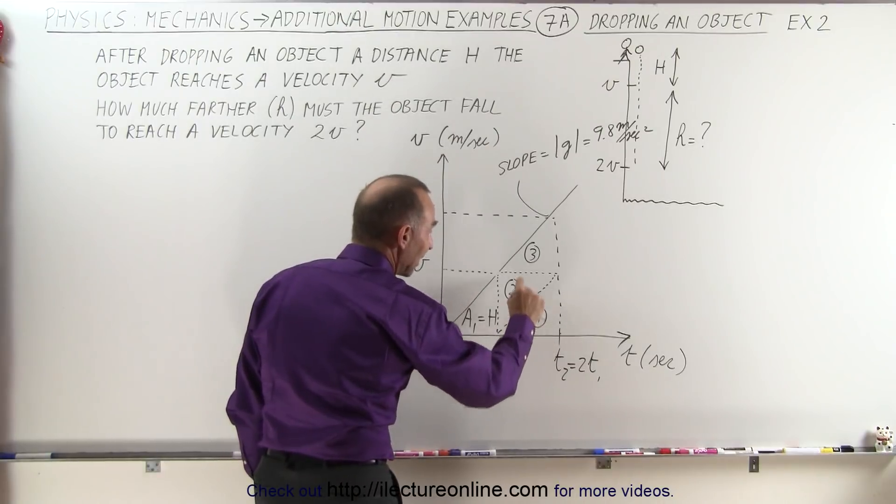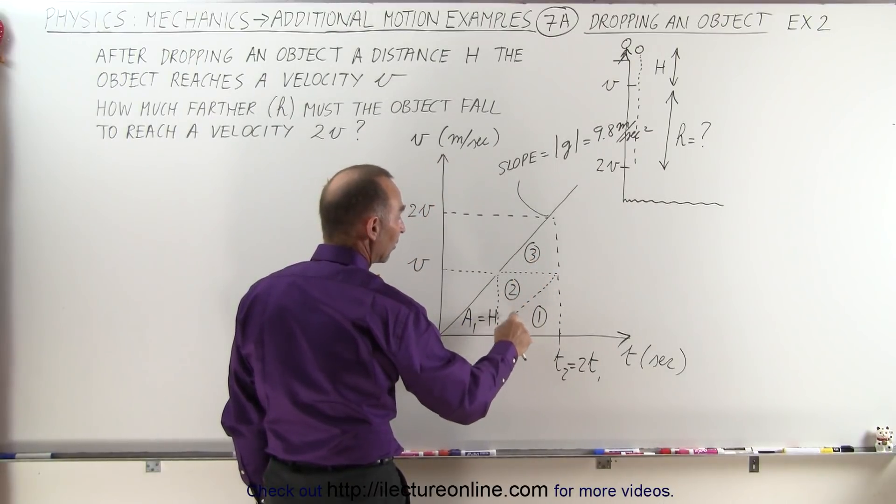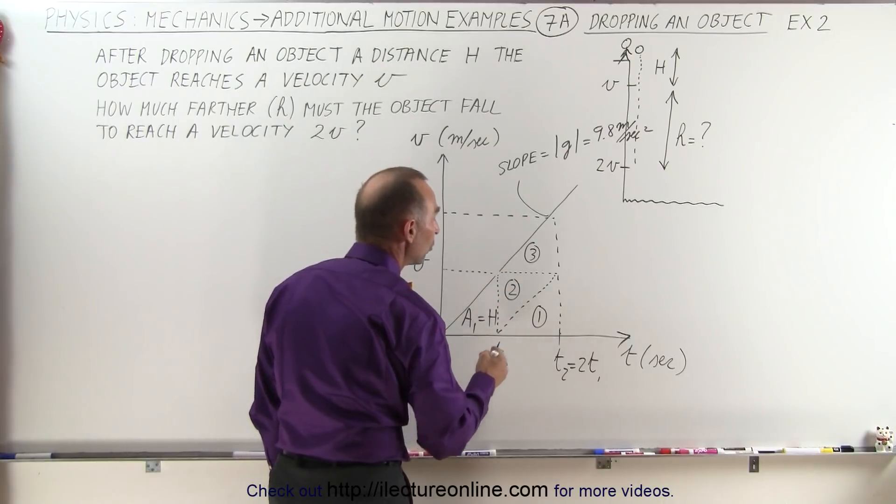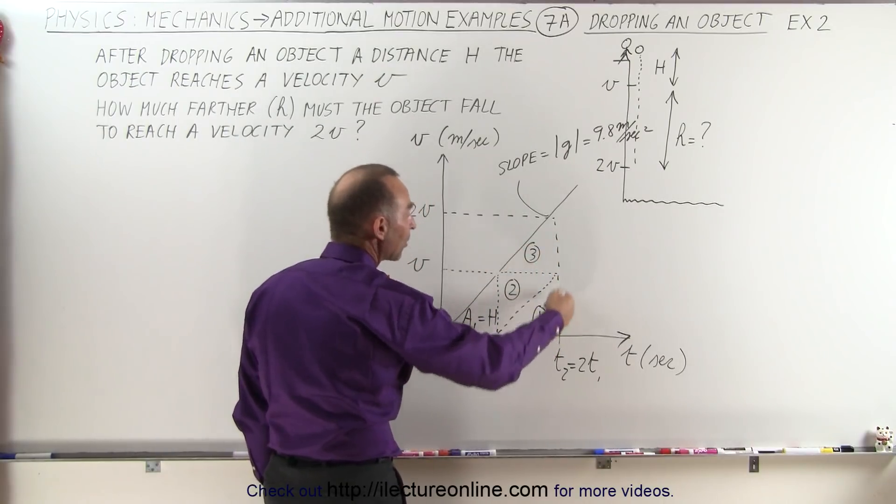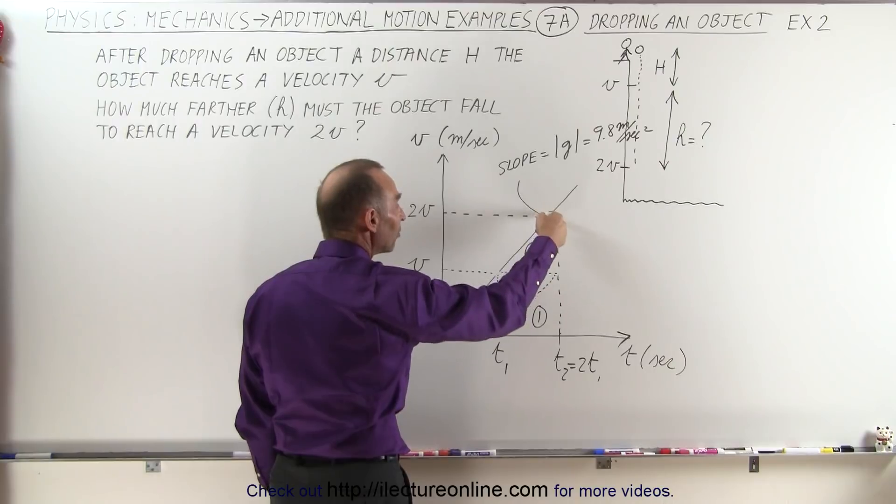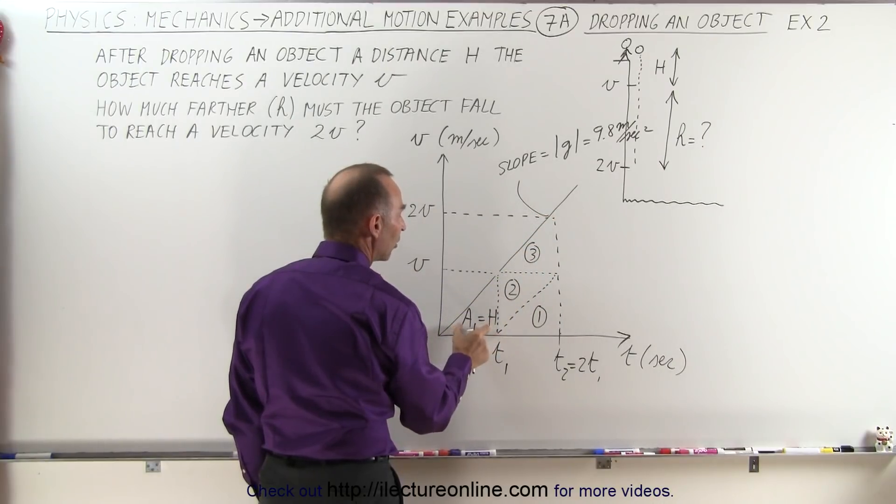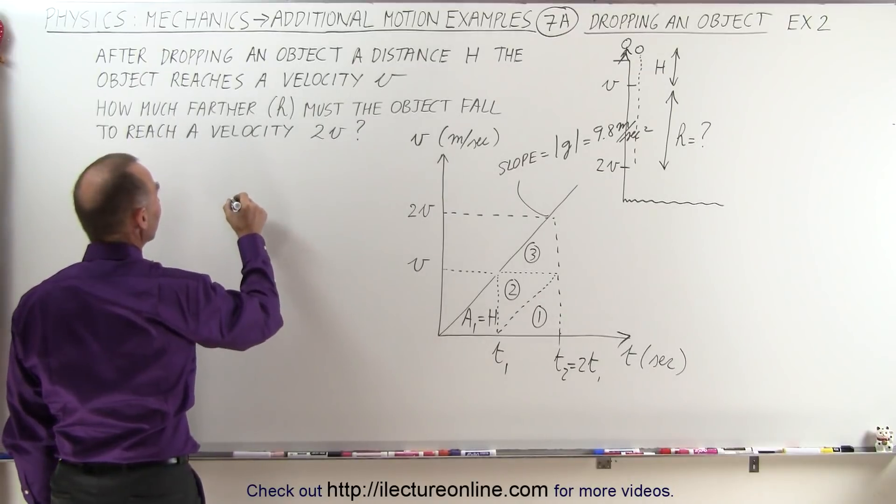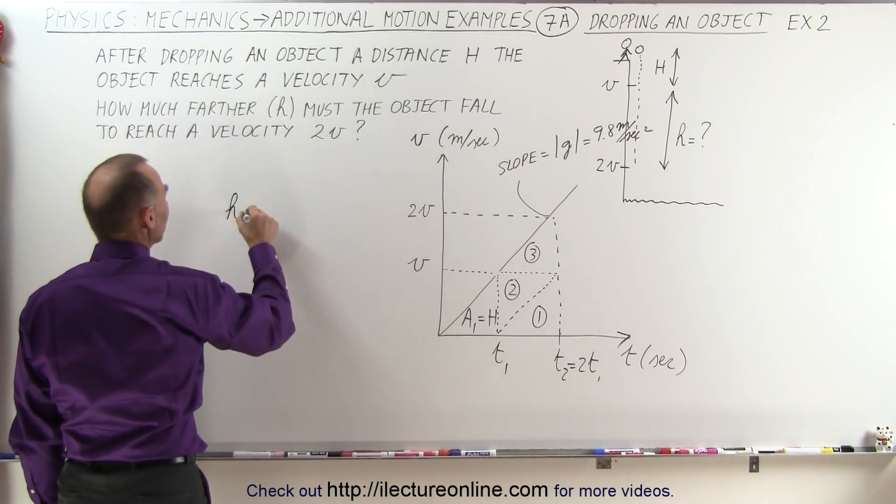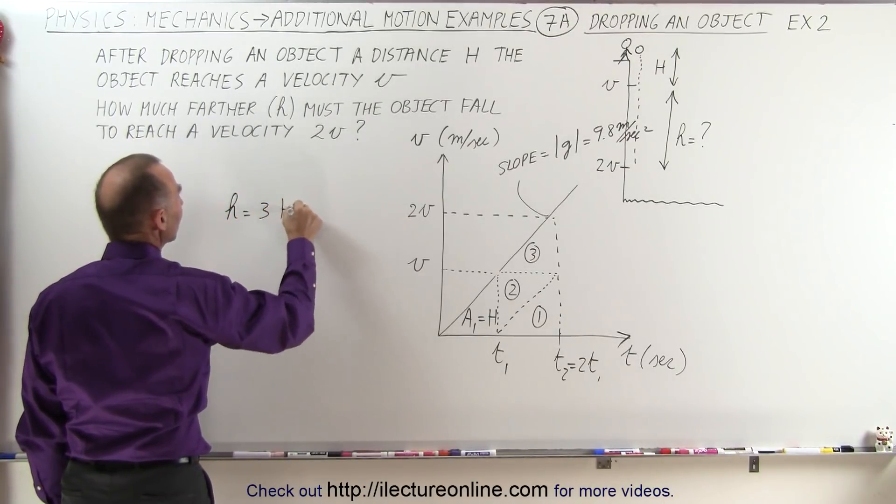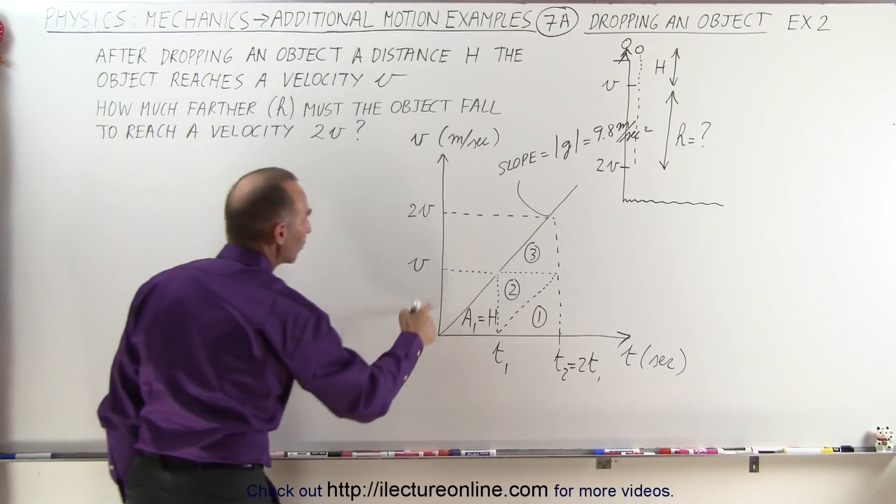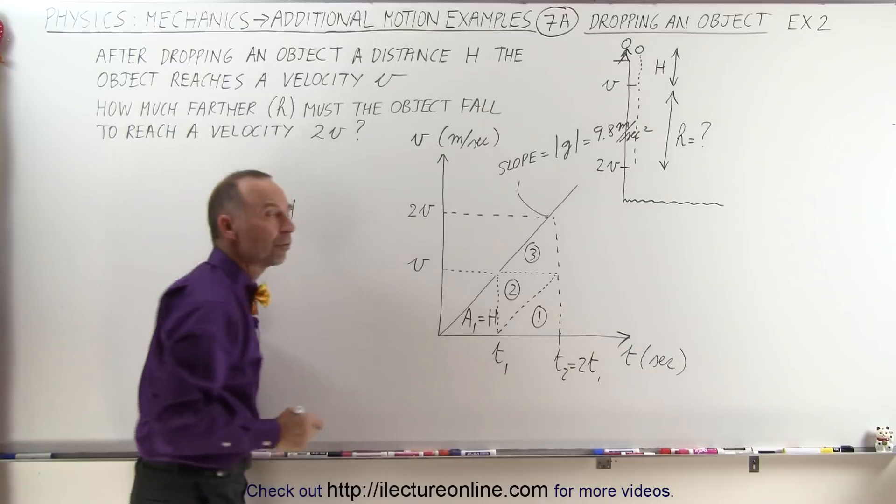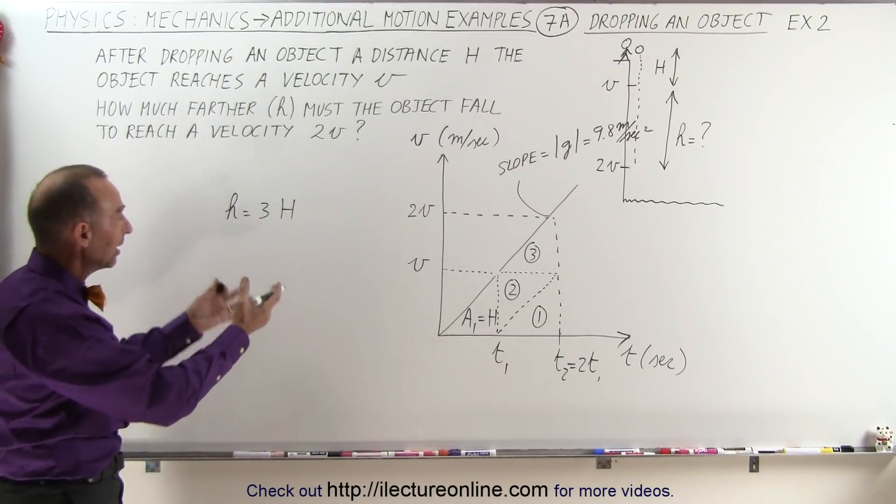Therefore, they represent the exact same distance traveled, but in this case there's three of them versus only one of them, which means we have to fall three times as far to reach twice the velocity as we have to fall to reach the velocity equal to v. So therefore we can say that h is equal to three times the distance we have to travel to reach v.